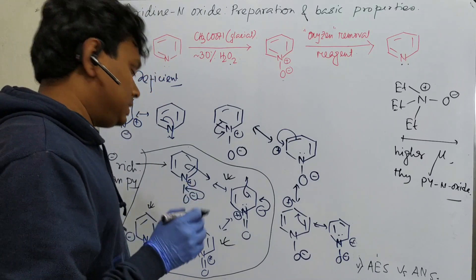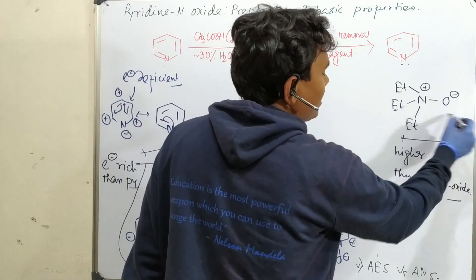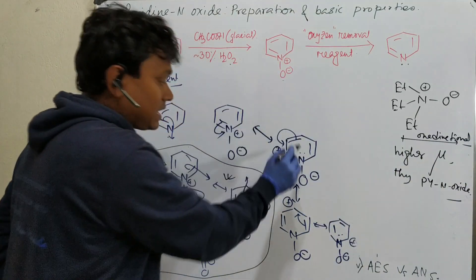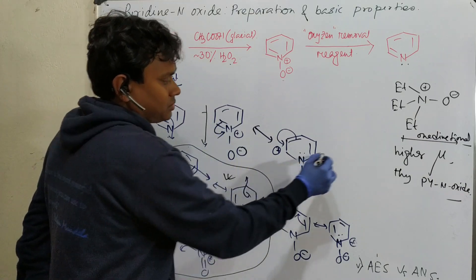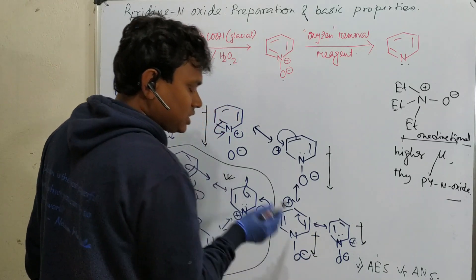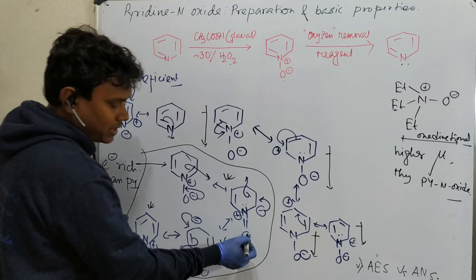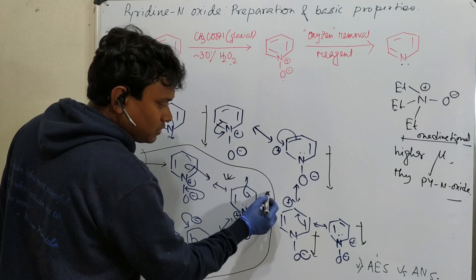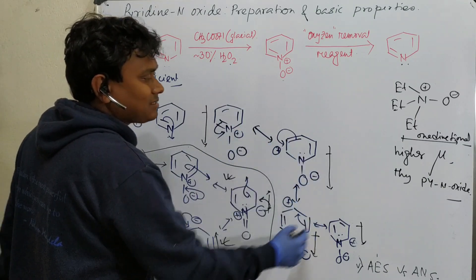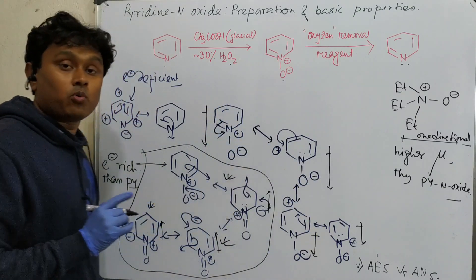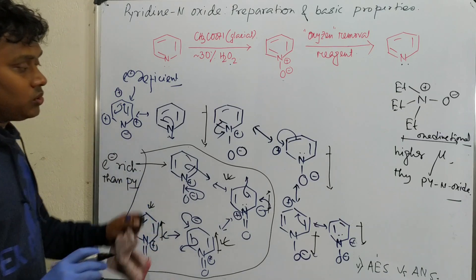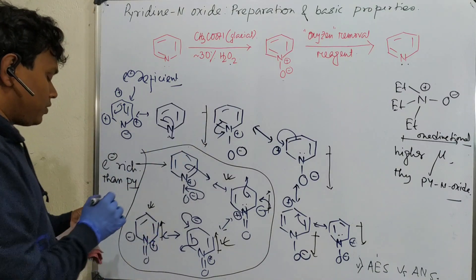The reason is that in triethylamine N-oxide the dipole moment acts in one direction only. But in pyridine N-oxide, the resonance canonical forms show dipole moments acting in opposite directions — the positive charge on the ring and the negative charge from the oxygen cancel each other out partially. So the dipole moments partially cancel, giving pyridine N-oxide a relatively lower dipole moment. This is an important point that could be asked in exams.